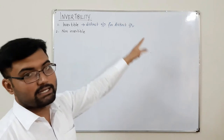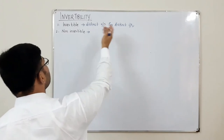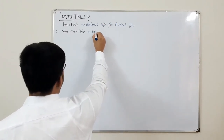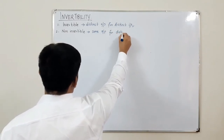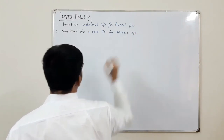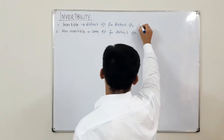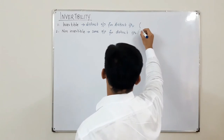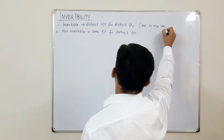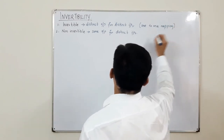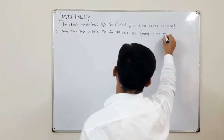In an invertible system we have distinct output for distinct values of input, whereas in a non-invertible system we may have the same output for distinct inputs. Based on your previous knowledge of functions, distinct output for distinct input means it's a one-to-one mapping, and the non-invertible case is a many-to-one mapping.